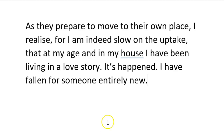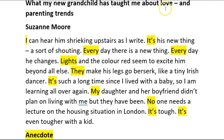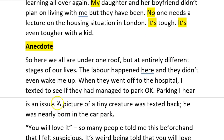Please let me know in the comments below if that technique worked. Now let's work out how the ending goes. So this is the ending to that last one we've just looked at — the grandmother piece. 'As they prepare to move to their own place, I realise — for I am indeed slow on the uptake — that at my age and in my house, I have been living in a love story. It's happened. I have fallen for someone entirely new.' I told you that has to refer back to something in the beginning, in order to give it a sense of completeness as an end — this idea of going back full circle. So this idea about love was at the very beginning, in that first headline. And then reasonably early on: 'a picture of a tiny creature was texted back. He was nearly born in the car park. You will love it, so many people told me.' So it's going back to this idea that was much earlier on in the piece — not quite at the very beginning, but close enough for you to get the idea that the ending refers back to something you mentioned earlier.